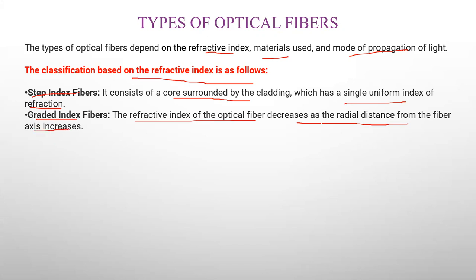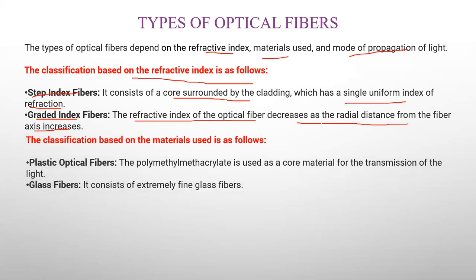The refractive index of the optical fiber decreases as the radial distance from the fiber axis increases. There is a gradual decrease — it decreases step by step. This is the key difference between step index fiber and graded index fiber.